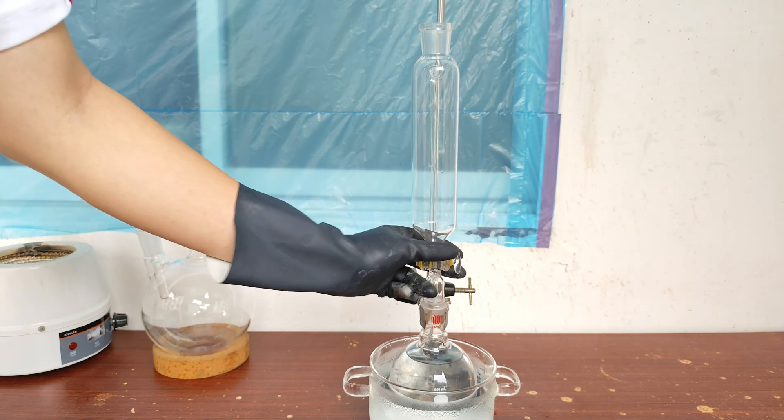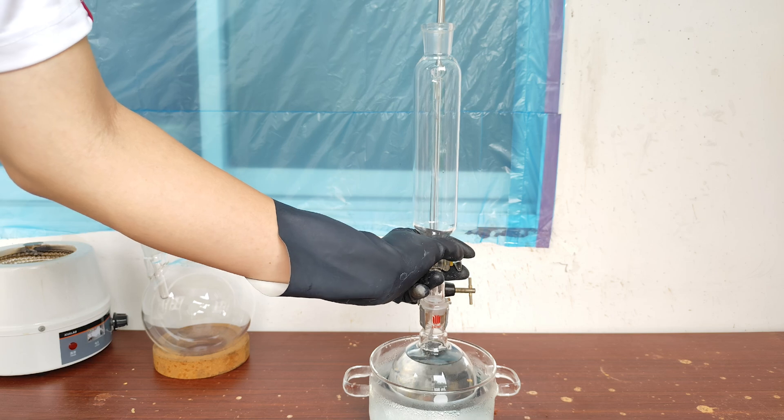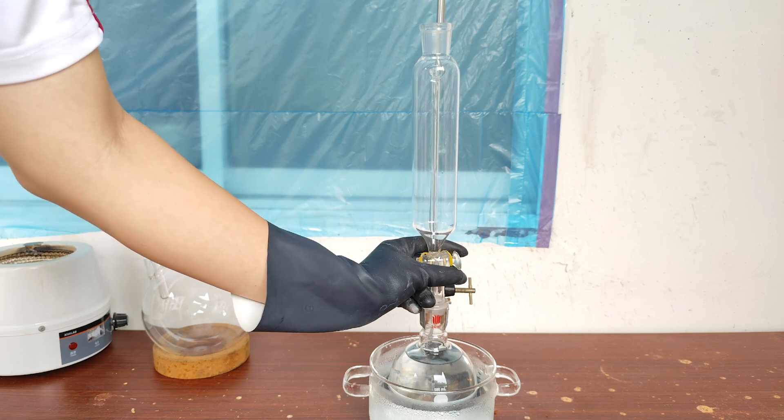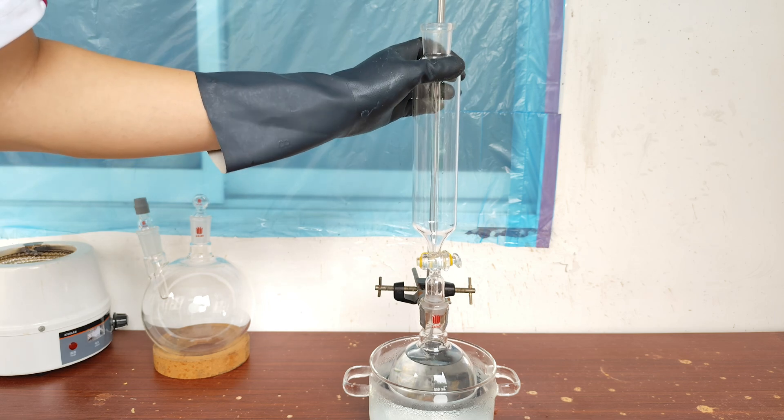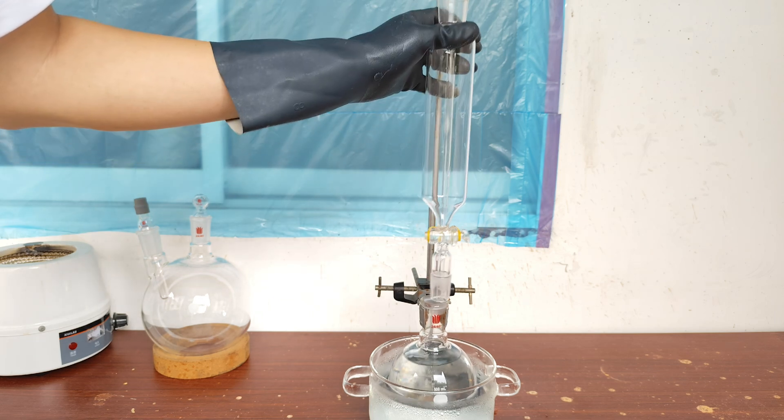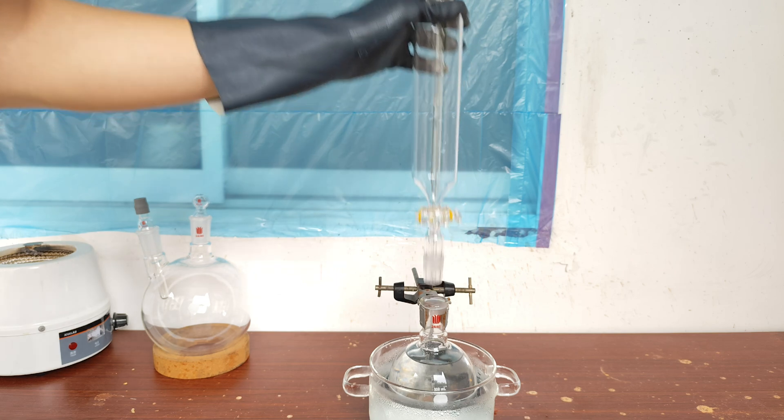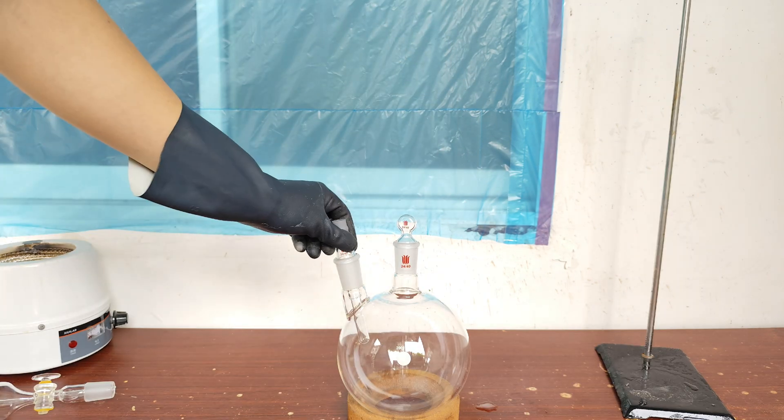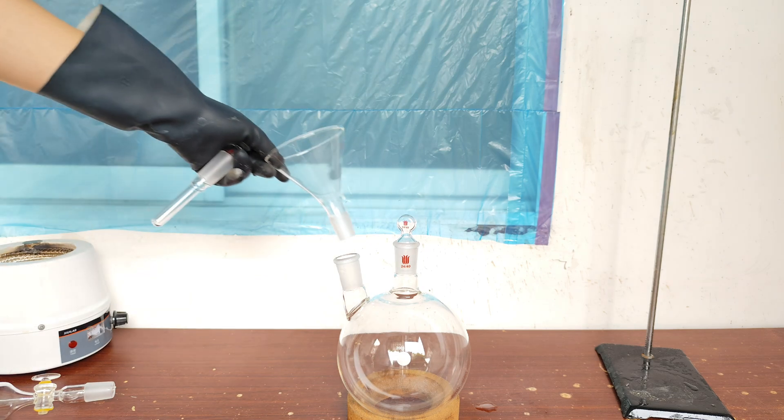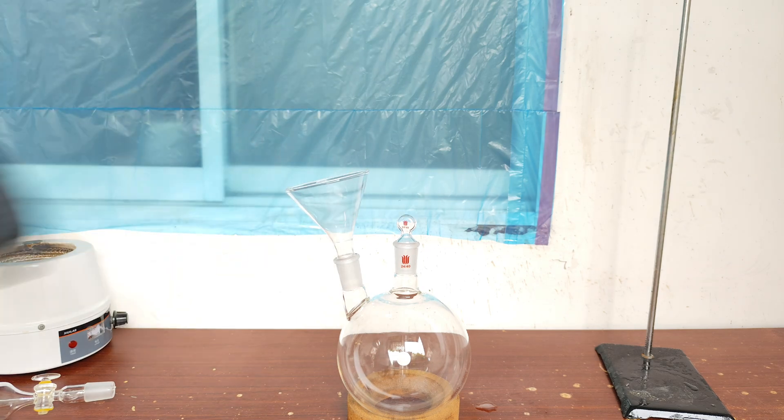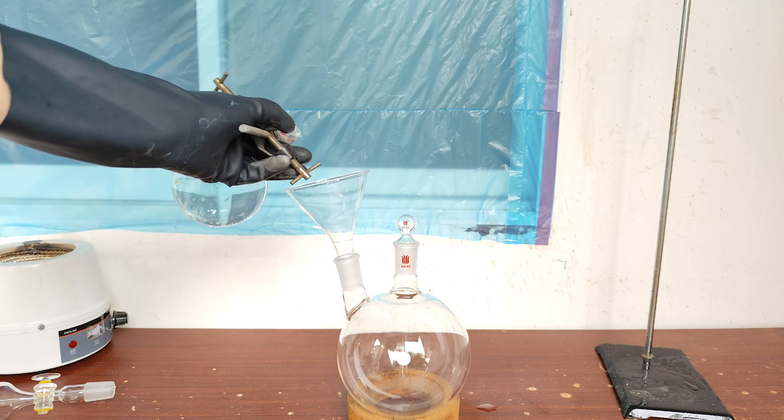After a few minutes, the dropping is over, so I turn off the stopcock and take away the dropping funnel. When the mixture is down to room temperature, I pour all of them into a bigger flask.